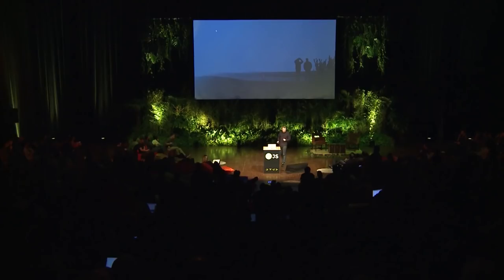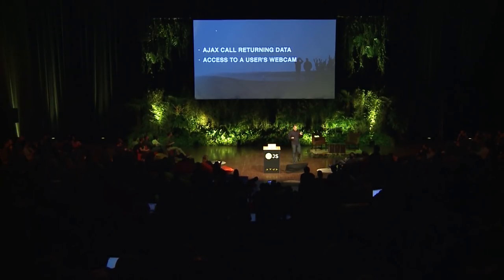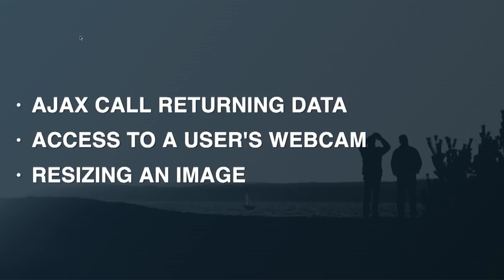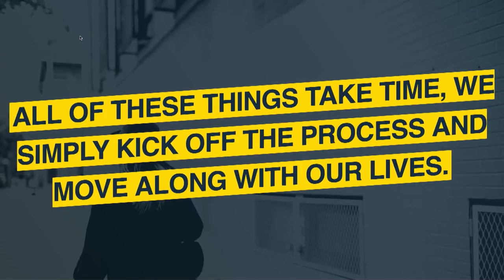Promises in JavaScript are sort of like an IOU for something that's going to happen at some point in the future. This could be an Ajax call returning data, accessing a user's webcam once they hit the allow button, or resizing an image. All of these things take time, and with promises we simply kick off the process and then move along with our lives.